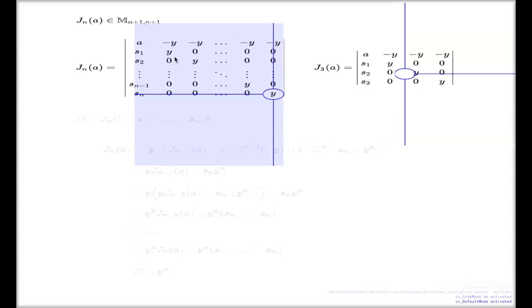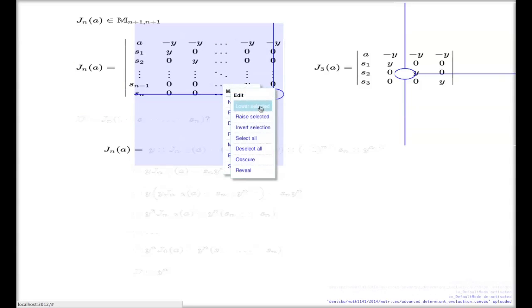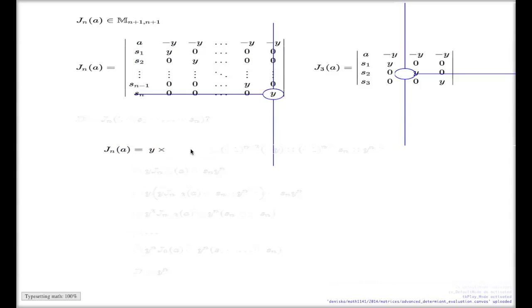So if I do my row reduction with the last column, if I use my recurrence relation, the term which corresponds to this position of a cross here - it is the element y times the corresponding minor which is the same matrix but size n minus 1. Sign alterations give me plus because the position of this element is the n plus 1 row, n plus 1 column, so when you add them it is even number. That's why you have plus.